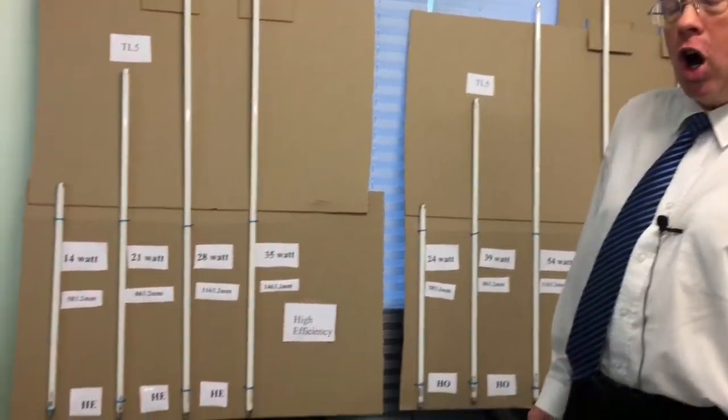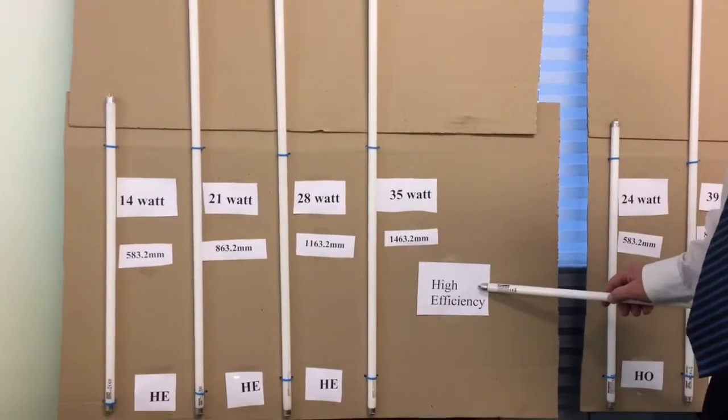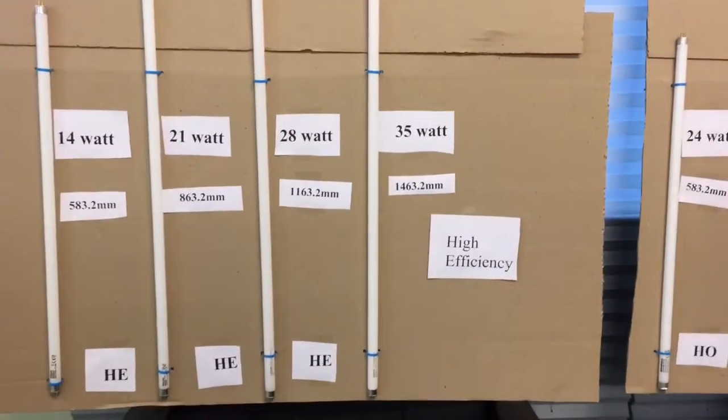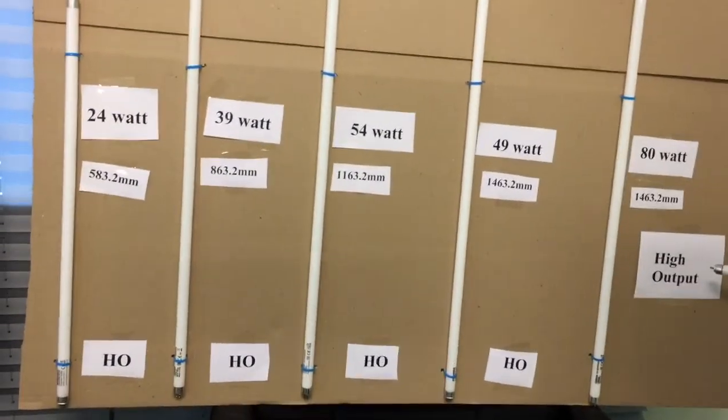It comes in two types: the HE, which is the high efficiency model, and also the HO, which is the high output model.